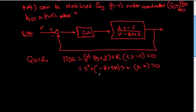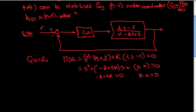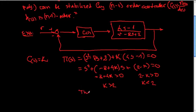In order to have a stable polynomial we require that (−8 + 4k) > 0 and that (2 − k) > 0. This is something that cannot be satisfied for any k. The first condition requires k > 2 and the second condition requires k < 2, so there is no k that can stabilize the system.